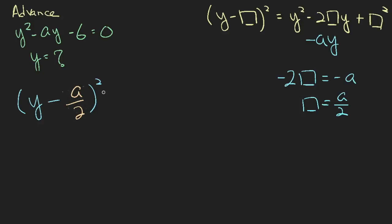So this equals y squared minus two times y times a over two, which will give us a y, plus a squared over four.